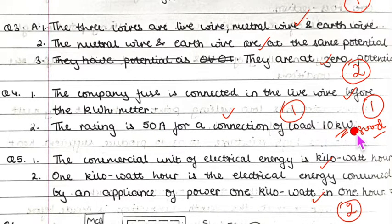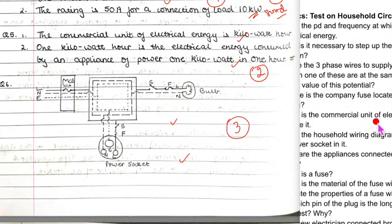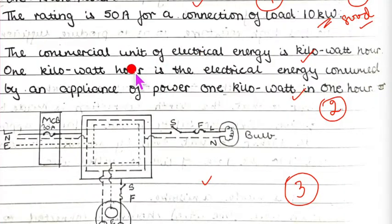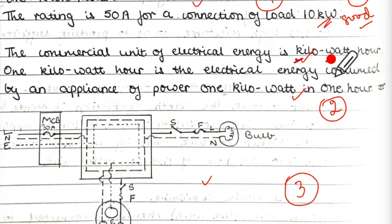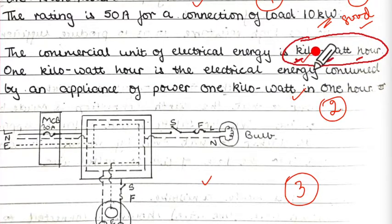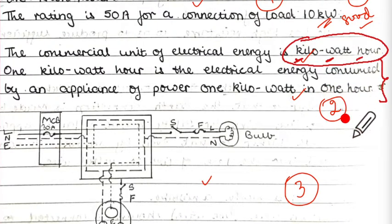Question five: What is the commercial unit of electrical energy and define it? The commercial unit is kilowatt hour. Note that the k, w, and h are all small letters — if you write any one of them as capital, you will lose marks. Remember to use small letters for units, and take the definition of kilowatt hour from any textbook.